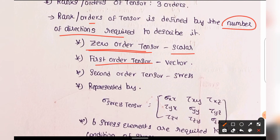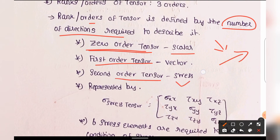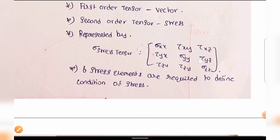Similarly, stress is a second order tensor. Stress has a magnitude — for example, 10 kN per meter square — and it also has a plane: xy plane, yz plane, xz plane, principal plane, etc. So stress is considered a second order tensor, and it can be represented in matrix format.